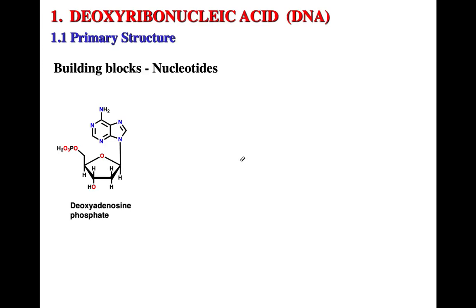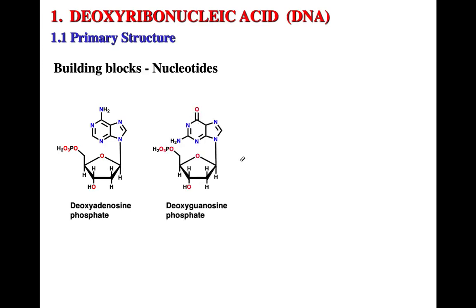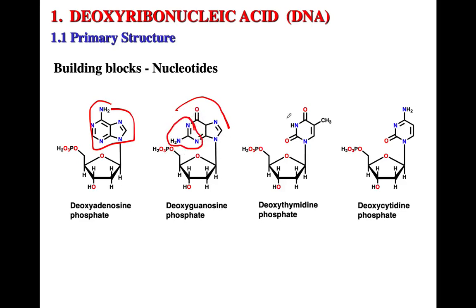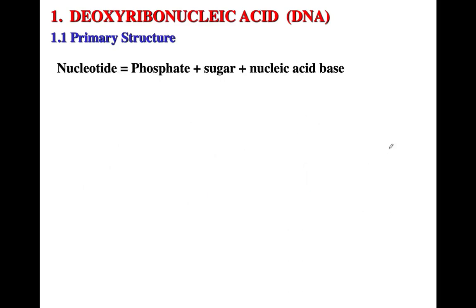The four nucleotides of DNA are: deoxyadenosine phosphate, deoxyguanosine phosphate, deoxythymidine phosphate, and deoxycytidine phosphate. The bases are adenosine, guanosine — you can recognize guanosine by the guanidino group — deoxythymidine, and deoxycytidine. So a nucleotide is phosphate plus sugar plus nucleic acid base.